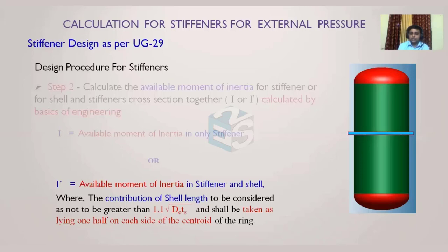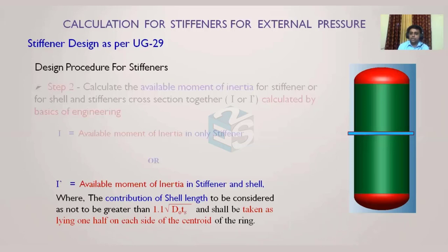This contributing shell length must be equally distributed on either side of the stiffener ring centroid. For example, if it is 100 mm, then 50 mm goes above and 50 mm below the stiffener ring center. Half on each side of the centroid of the ring. The code clearly defines both the length limit and its distribution across the stiffener cross-section. This is how we calculate I', the available moment of inertia.